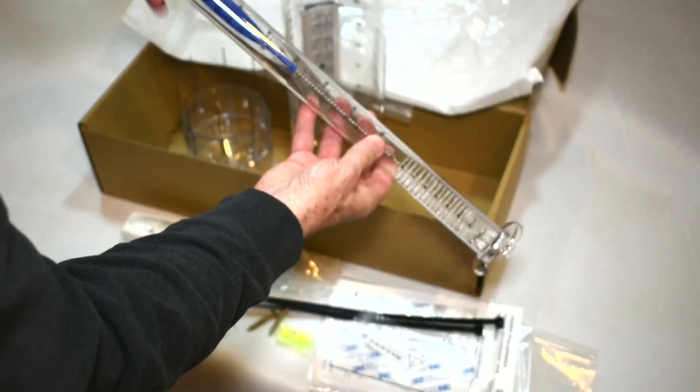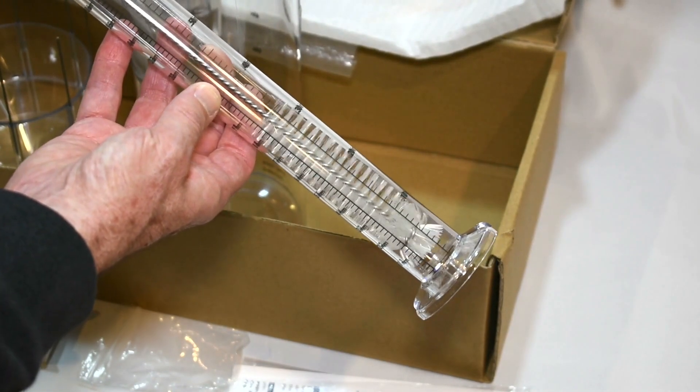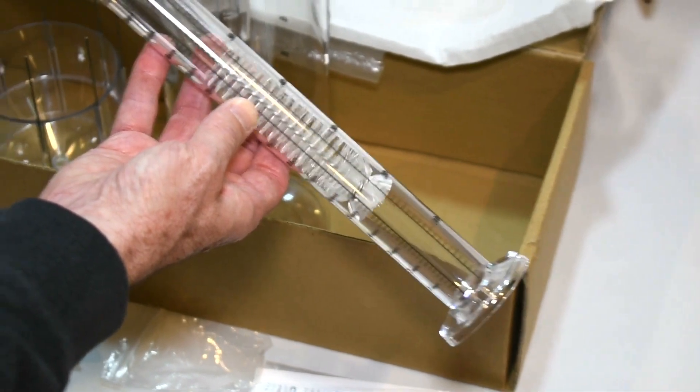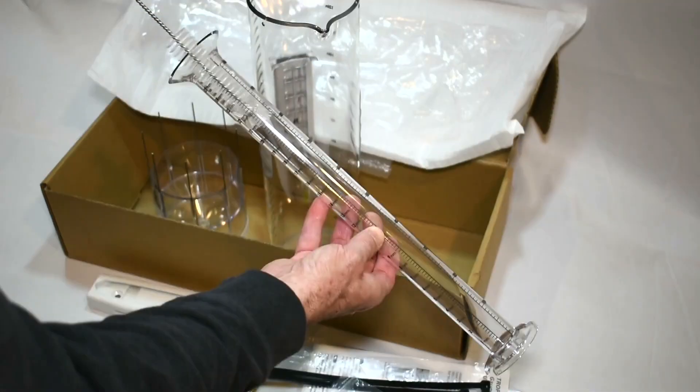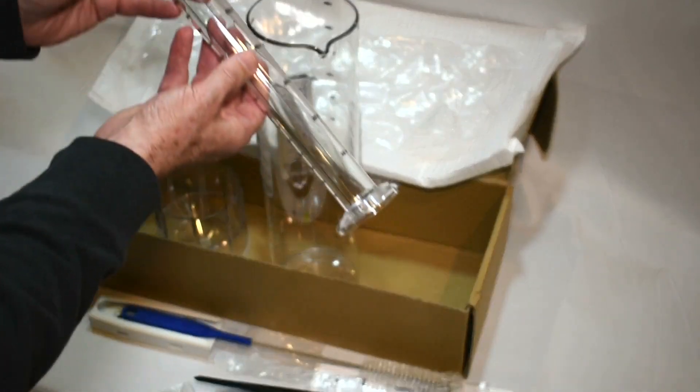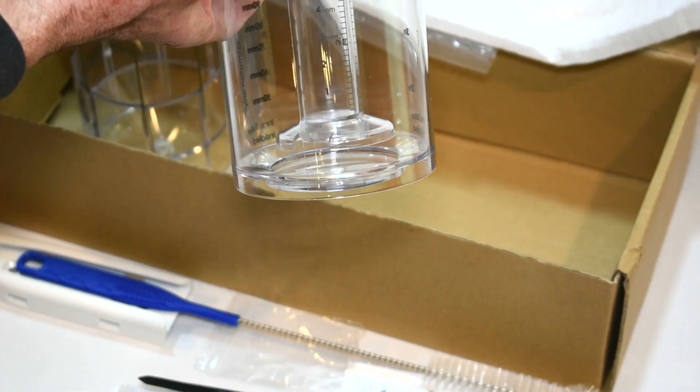Because this tube is so much longer than traditional four inch rain gauges, we've offered this brush that will allow you to clean it periodically. It's a nylon brush and it will reach all the way down to the bottom conveniently. Certainly do that if you get a lot of dirt at the bottom of the inner tube.